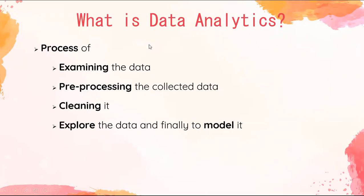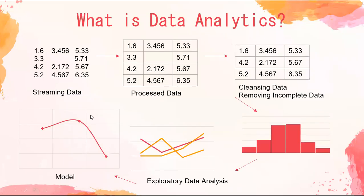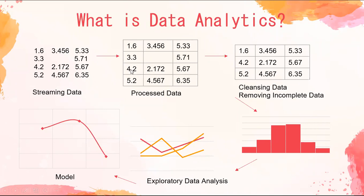To give a pictorial representation, a diagram has been plotted. At the first stage, we have streaming data — the data collected from sensors. For example, the first column is temperature data, the second is pressure data, and the third is moisture data. Whatever data is collected from the sensor is kept as-is. In the next level, the data is processed — arranged into a table with rows and columns, where each row represents a particular device's values.